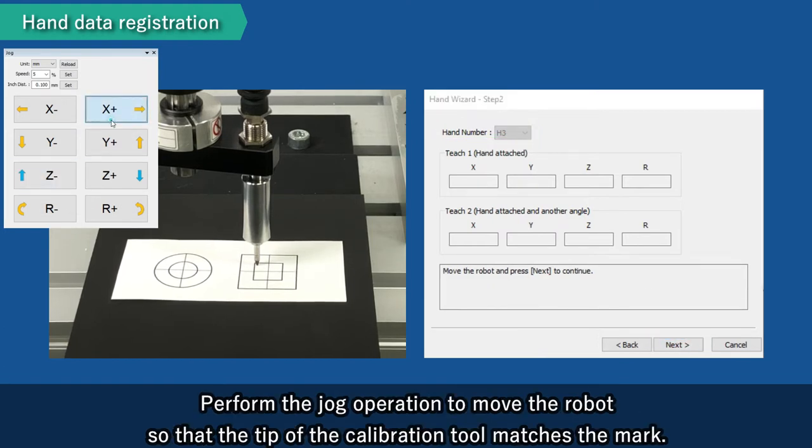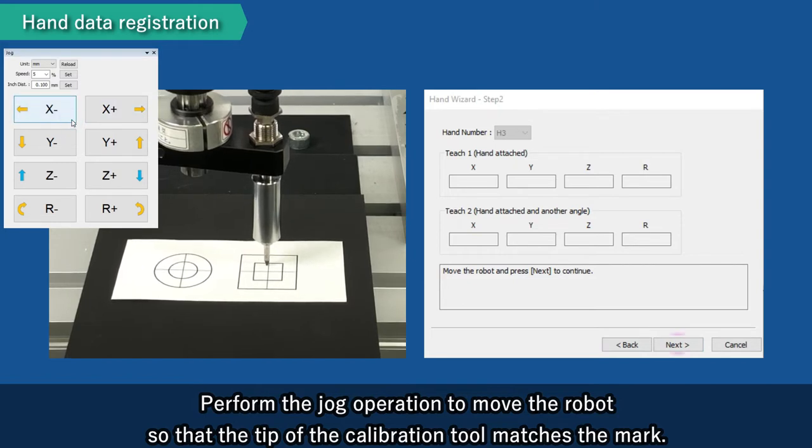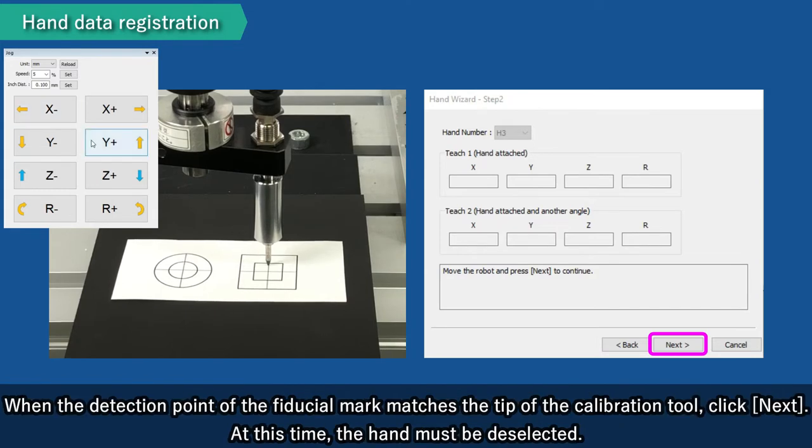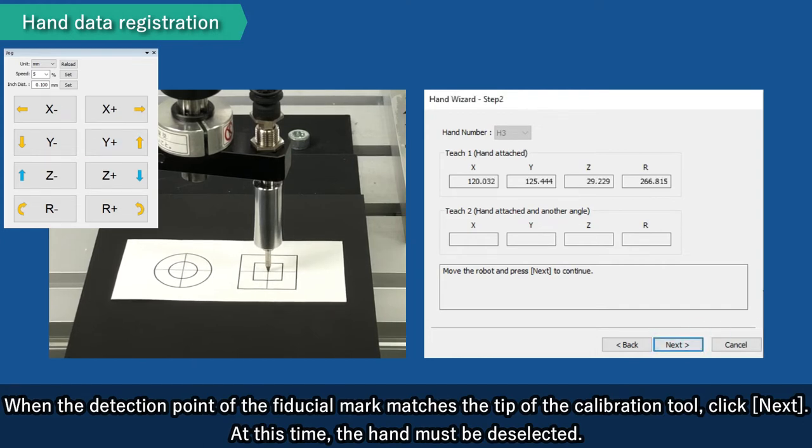Perform the jog operation to move the robot so that the tip of the calibration tool matches the mark. When the detection point of the fiducial mark matches the tip of the calibration tool, click Next. At this time, the hand must be deselected.